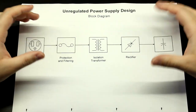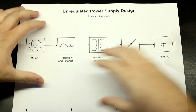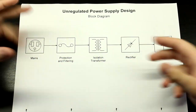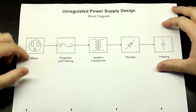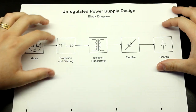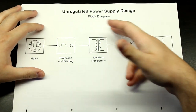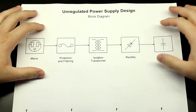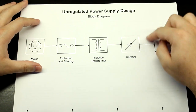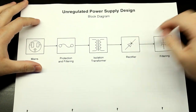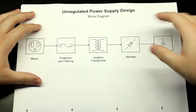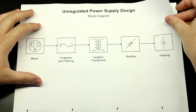This is your typical block diagram for an unregulated supply. You have your line voltage — mains — and you usually pass it through some filtering or protection, then through an isolation transformer, a rectifying stage, and some filtering to smooth out the peaks from the rectifier. So let's take a look at each one of these steps and how to properly design a supply like this.